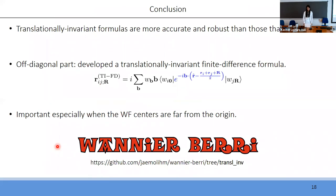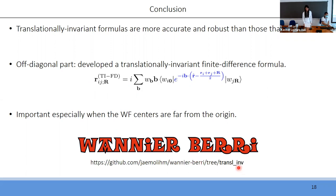In conclusion, we have shown numerically and from the real-space interpretation that using a translation-invariant formula gives much more accurate and robust results. We have developed a new expression giving fully translation-invariant matrix elements. This code is implemented in a branch of the WannierBerry repository, and I plan to merge it into the official develop branch during this developers meeting. Thank you for your attention.